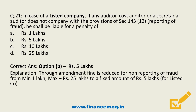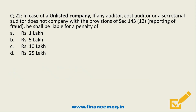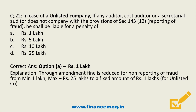So in case of a listed company, if the auditor, cost auditor or secretarial auditor does not report the fraud, he will be liable for a penalty of Rs. 5 lakh. And in case of an unlisted company in the same situation — auditor, cost auditor or secretarial auditor does not comply and does not report the fraud — the penalty is Rs. 1 lakh. Through this amendment, the minimum and maximum concept has been changed to a fixed fine of Rs. 1 lakh. So for listed companies the fine is 5 lakh and for unlisted companies it is 1 lakh fixed. There is no minimum and maximum.